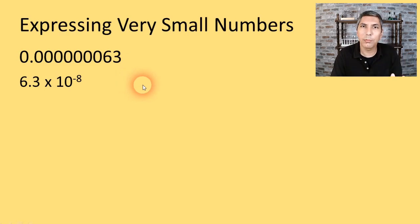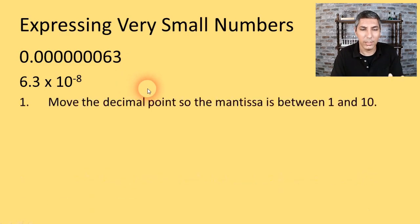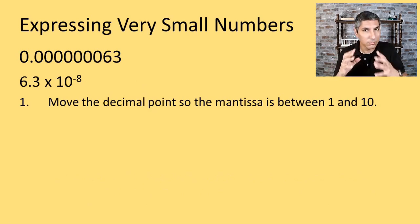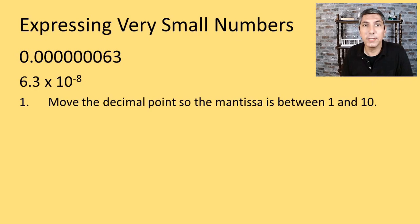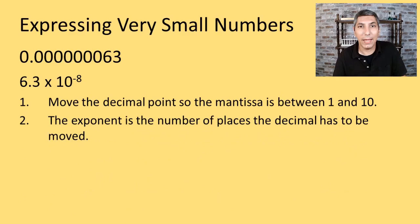So this time it's 6.3 times 10 to the negative 8. Now, how do we write a number in scientific notation? Let's go through those steps again. First of all, you want to move the decimal point so that the mantissa, or that coefficient there out in front, is in between 1 and 10, greater than or equal to 1 and less than 10. And then we're going to count the number of decimal places that we move that over. The exponent is equal to the number of places that the decimal had to be moved.